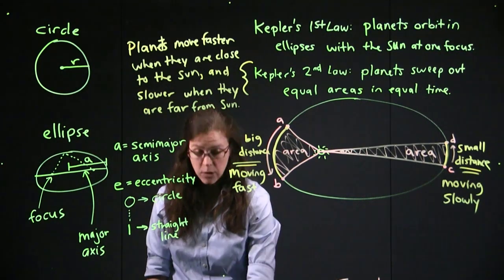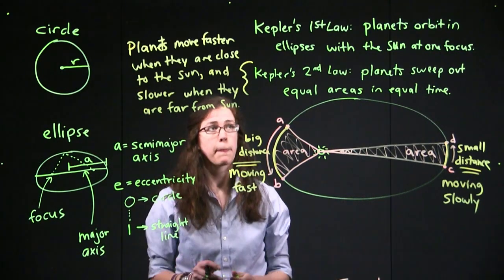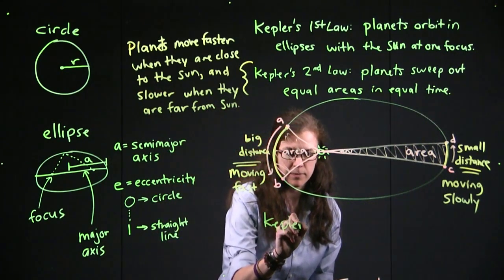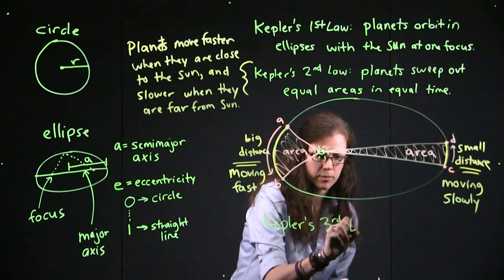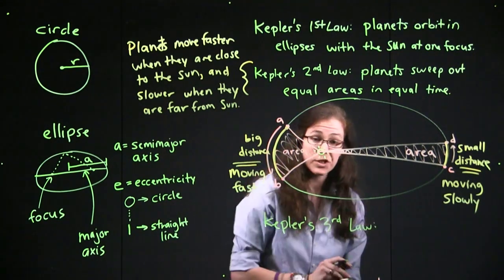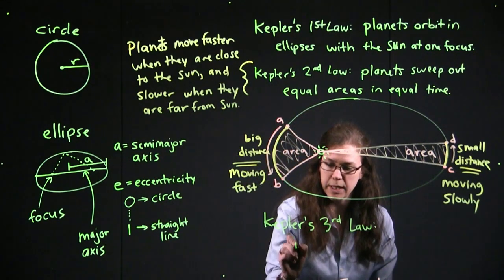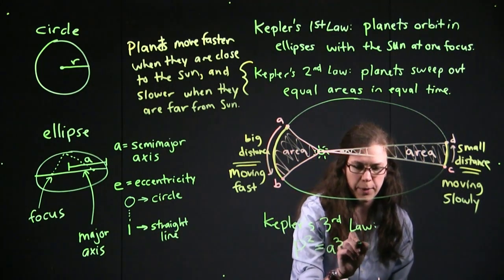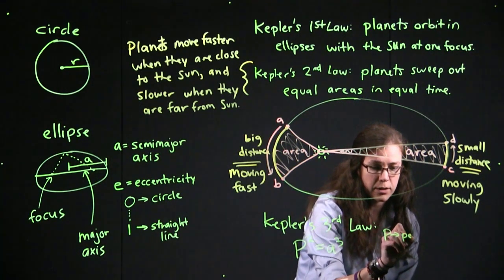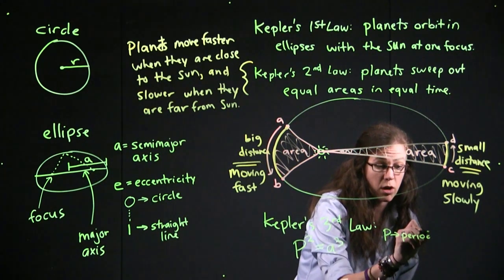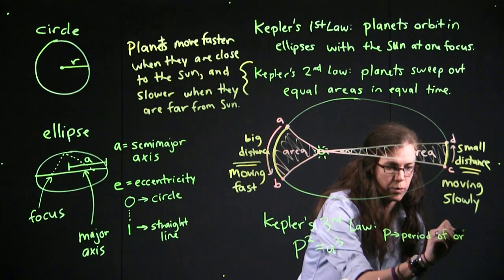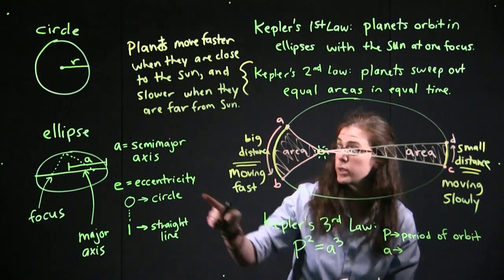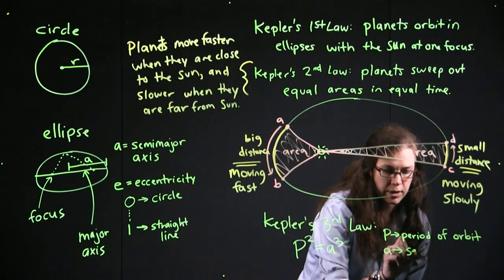Before we close out today's deeper look, we've got Kepler's third law that we'll mention here, which is just an equation actually, and it's p squared equals a cubed, where p is the period of the orbit, so how long it takes for something to go once around the sun, and a is the semi-major axis.